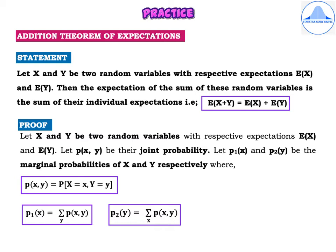Let's start with the proof. Let x and y be two random variables with respective expectations E(x) and E(y). Let p be their joint probability, and let p1 and p2 be the marginal probabilities of x and y respectively. Write the formula for p(x, y), which is the probability that capital X equals small x and capital Y equals small y. And p1(x) = summation over y of p(x, y). It is very important that you list down all the required formulae before beginning the proof.